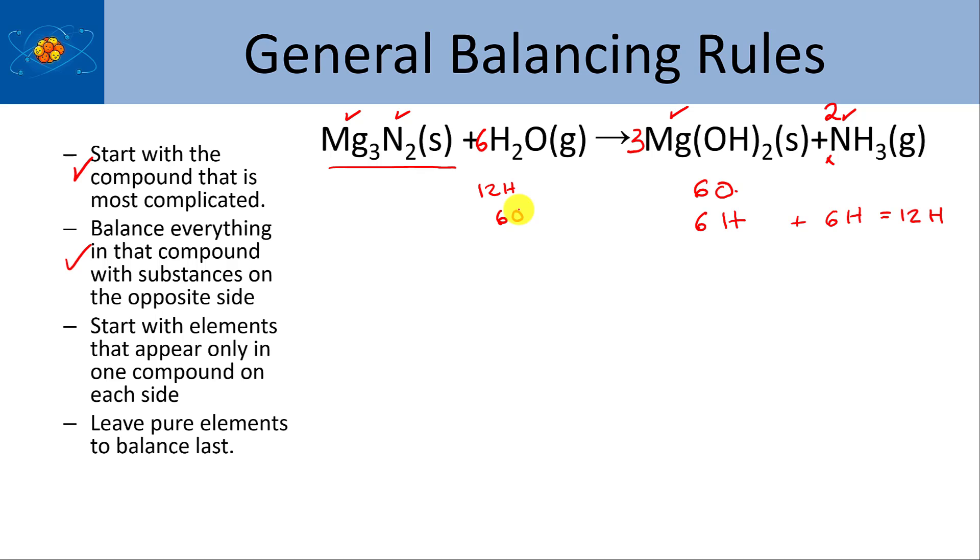A couple of other things, pieces of advice. Start with the elements that appear only in one compound on each side. So again, looking at the magnesium nitride. Magnesium is only in the magnesium nitride and it's only in the magnesium hydroxide on the product. That's what made that so easy to balance. And then look at the nitrogen, right? There's two nitrogens. There's only nitrogen and ammonia. Again, that made that easy to balance.